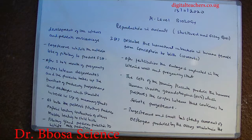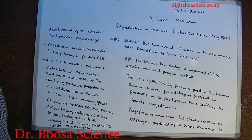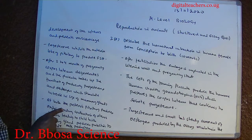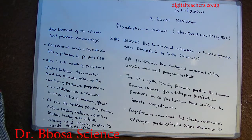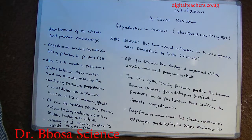After fertilization, the corpus luteum degenerates, its function taken up by the placenta to produce oestrogen and progesterone that stimulate increase in the size of mammary glands. At birth, the posterior pituitary produces a hormone, oxytocin, leading to contraction of the uterus and childbirth. The pituitary gland produces prolactin to initiate milk production.